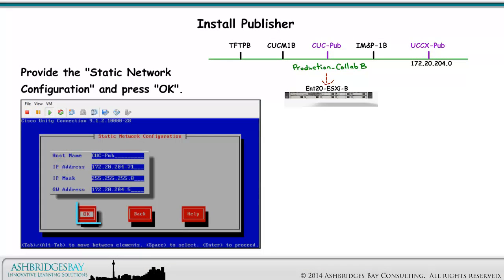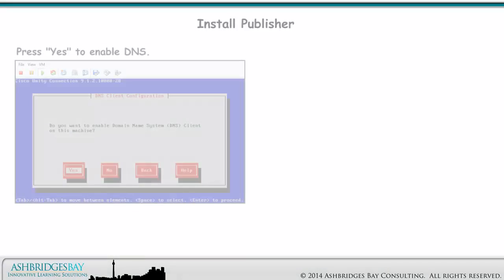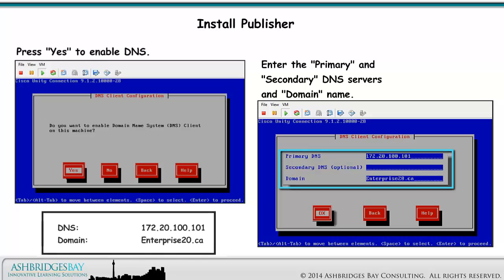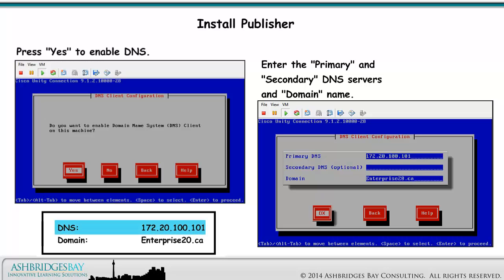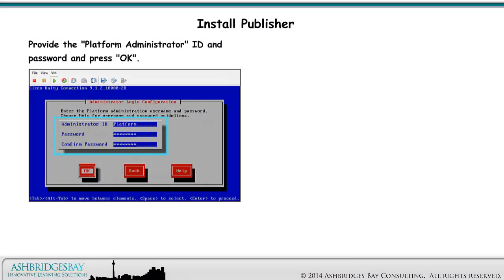Provide the static network configuration and press OK. For Enterprise 20, CUCPUB has IP address 172.20.204.71 with a mask of 255.255.255.0 and a default gateway of 172.20.204.5. Enter the primary and secondary DNS servers and domain name. For Enterprise 20, we have only one DNS server at 172.20.100.101 with the domain enterprise20.ca. Provide the platform administrator ID and password and press OK. The platform administrator has access to the console and the OS administration and disaster recovery web pages.